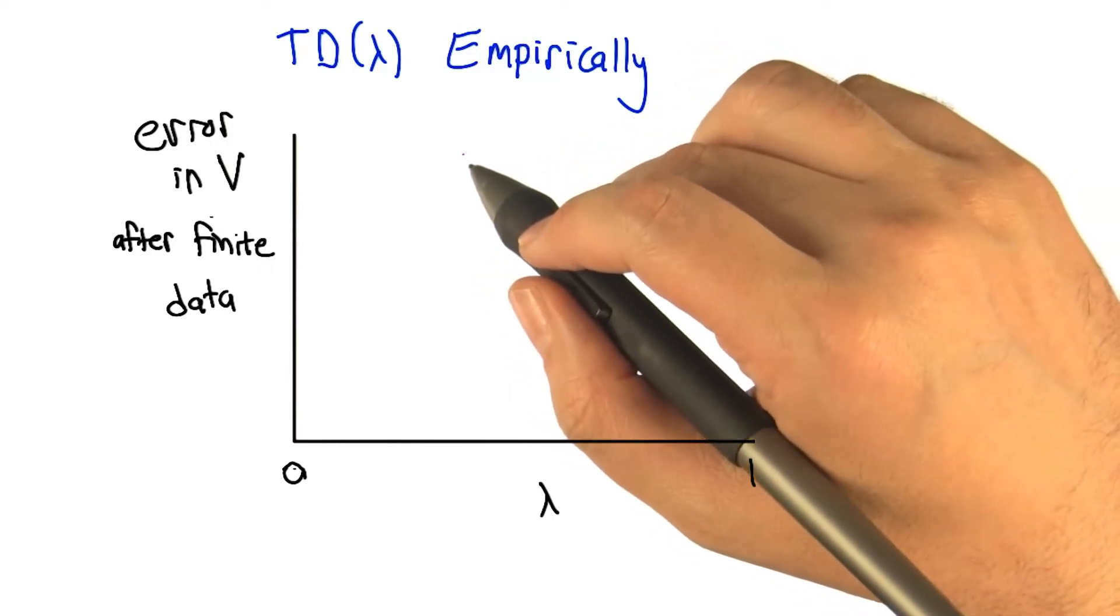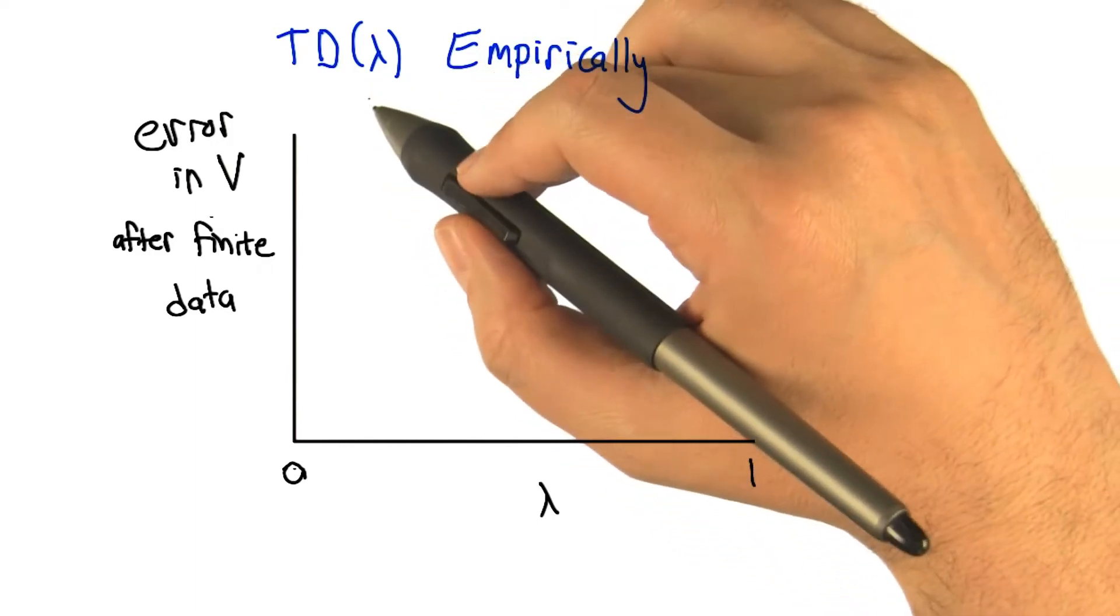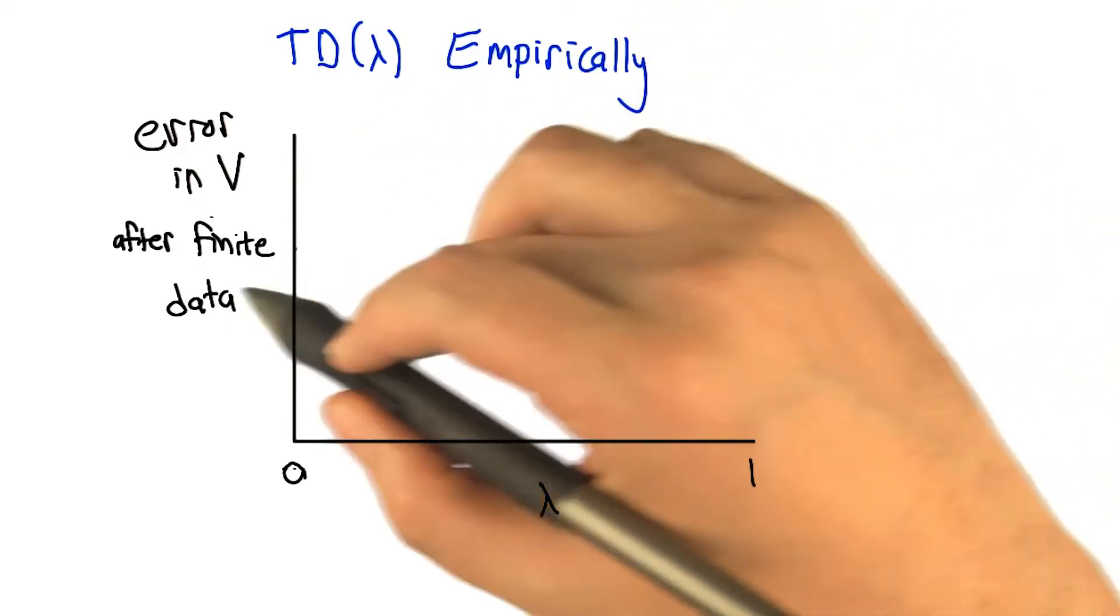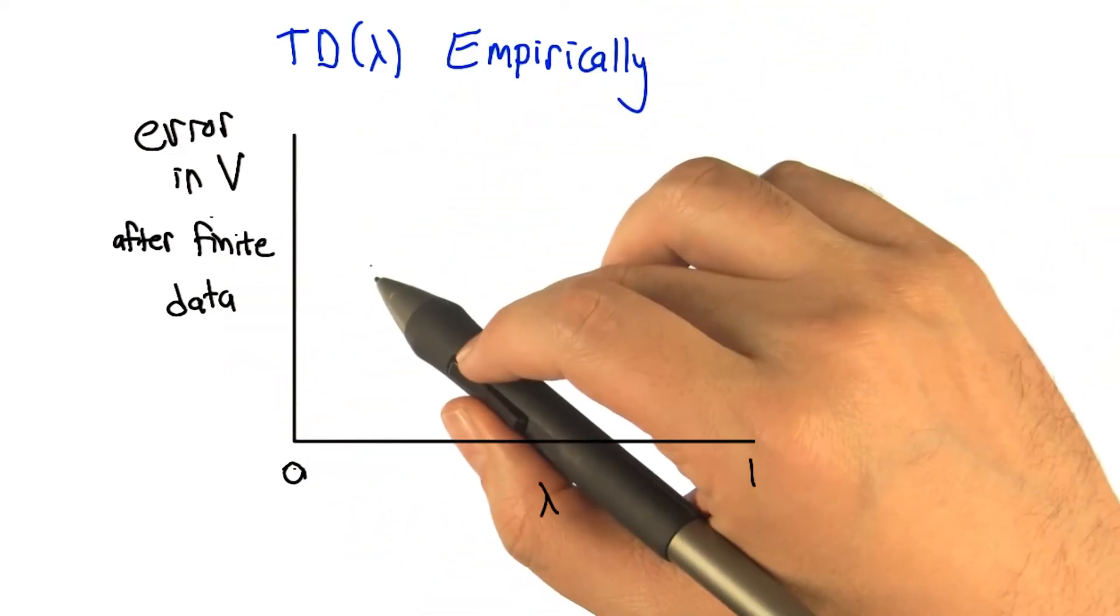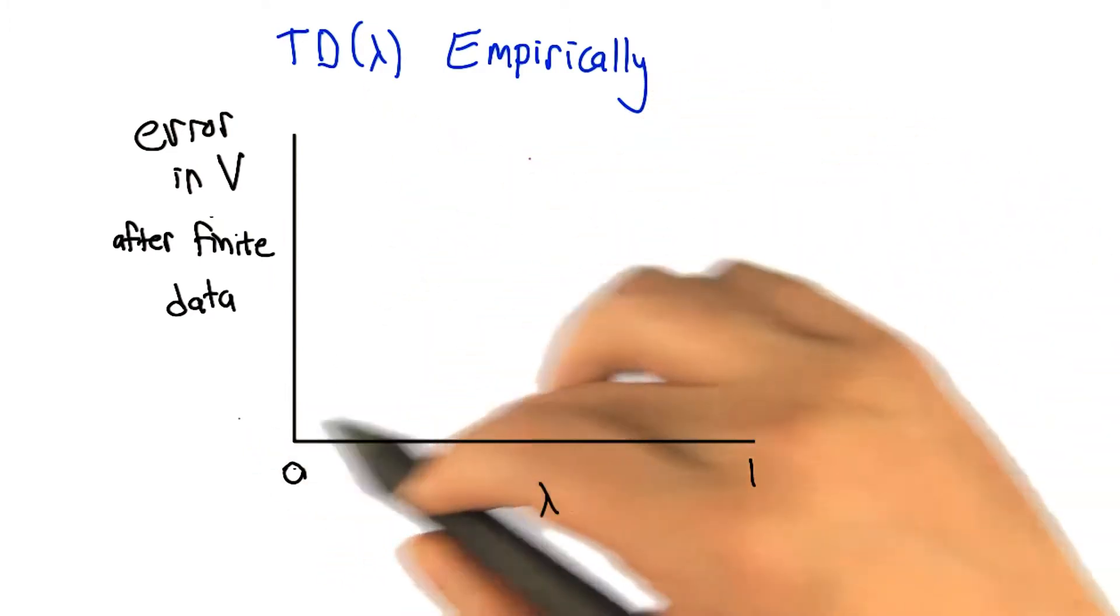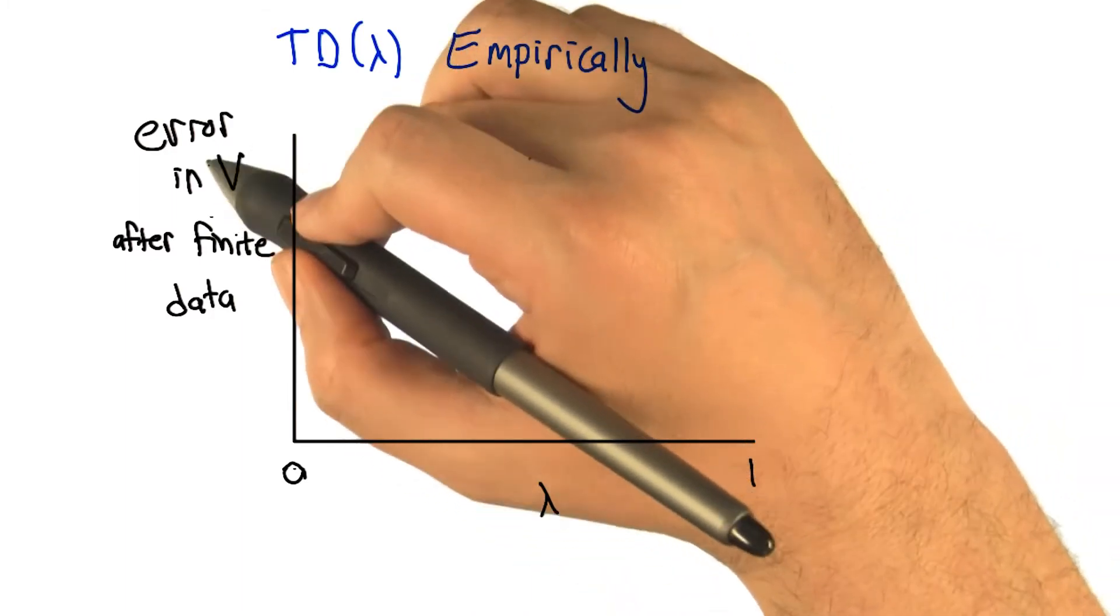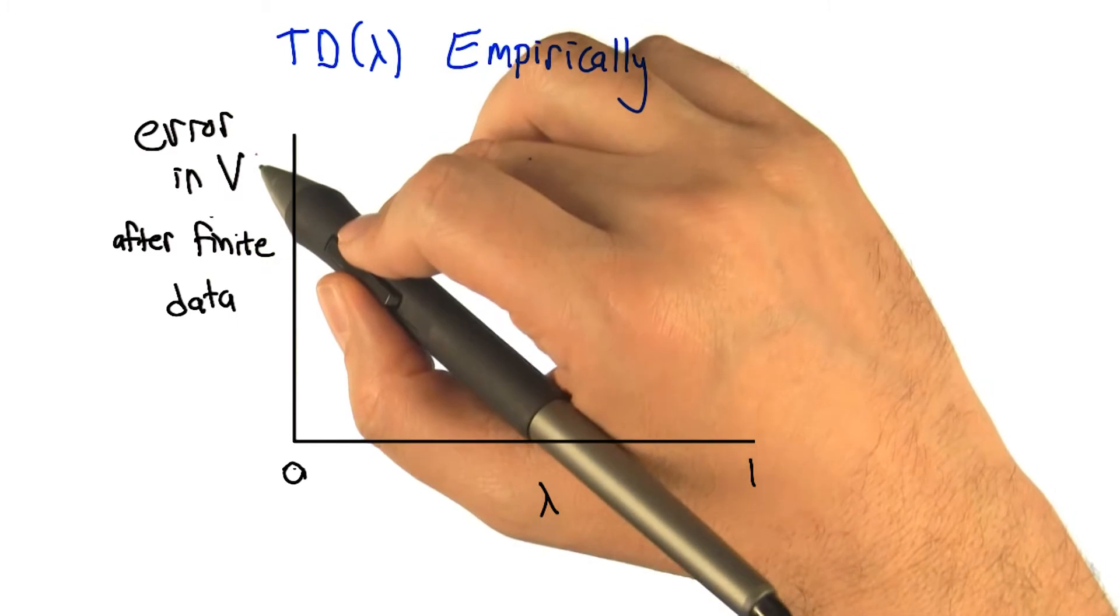All right, so let's see if we can think through or maybe guess what's going to happen if TD lambda is run as an update algorithm on some finite amount of data. So we give the system some finite amount of data, and then we run TD lambda with different possible values of lambda. And then we ask, all right, the V that you've learned, how far is that from what the V should have been if we had infinite data?